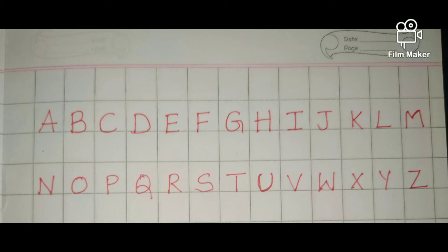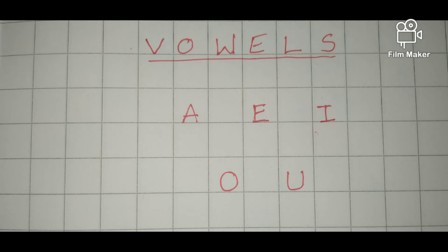There are some special letters in our English alphabet. We call them vowels. What are those vowels, children? A E I O U. Yes.